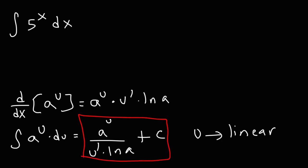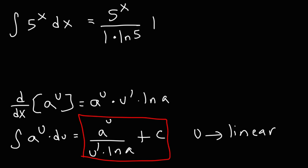The integral of 5 to the x is going to be 5 to the x divided by the derivative of x, which is 1, times the natural log of 5, plus the constant c.